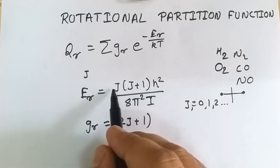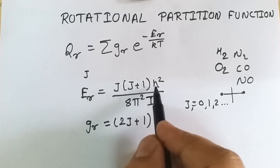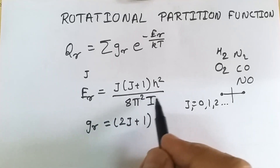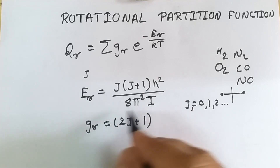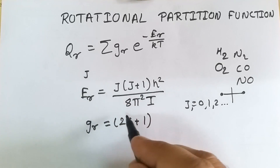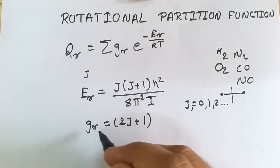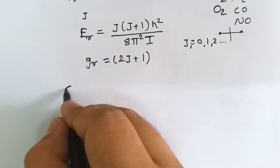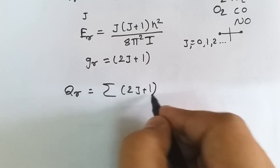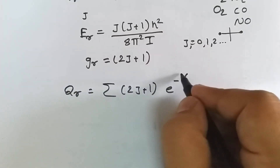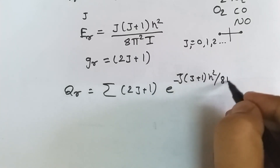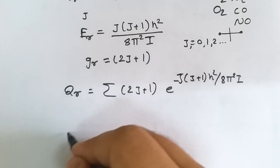For j=1, the energy is 1×(1+1) × h²/(8π²I) = 2h²/(8π²I) = h²/(4π²I). If the degeneracy is 3, then the energy of the system changes accordingly. We substitute both these terms — the degeneracy 2j+1 and the energy expression — into our partition function equation. So qr equals the summation of (2j+1) × e raised to minus j(j+1)h²/(8π²IkT).